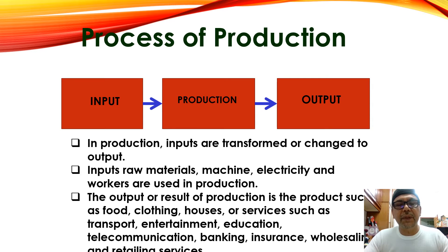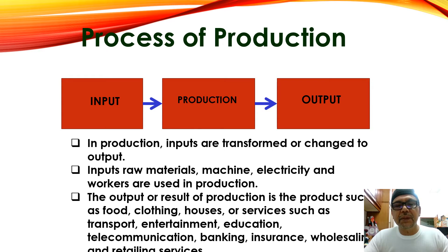Input is the raw material. Production is the process to make the raw materials into the finished goods. In production, inputs are transferred to output — that is the finished goods. Inputs are the raw material, machine, electricity, workers. This is all used in the production. The result of production is the product such as food, clothing, etc.